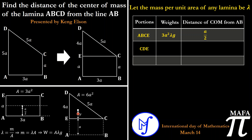The distance from the base of the triangle is y, which is one-third of the height. The area is half times base times height: half times 3a times 4a, which gives us 6a squared. The distance of the center of mass of this triangle from line AB is y plus a — that is, one-third of 4a plus a, giving us 4a/3 plus a, which simplifies to 7a/3.